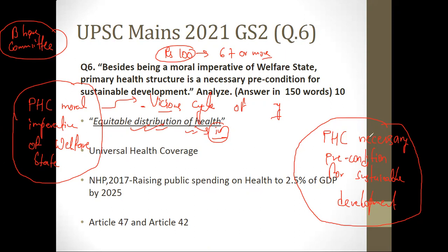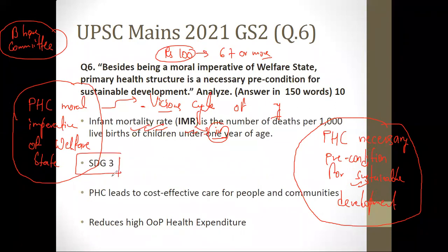Now for the second part: PHC as a necessary precondition for sustainable development. The first point is SDG 3. Remember the 17 SDGs — SDG 3 is to ensure healthy lives and promote well-being for all at all ages. India has a mammoth role in helping the world attain SDG 3 because our health indicators are not very good, and without proper primary health care, attaining SDG 3 would be very difficult.